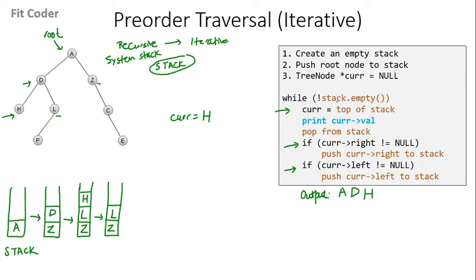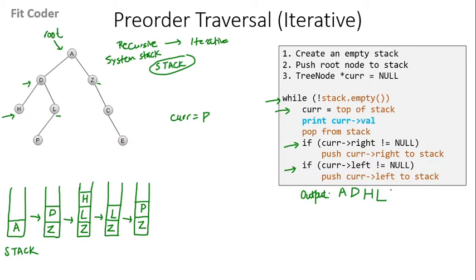We again come to the while condition — stack is not empty. We initialize current with the top of the stack, which is now L. We print L and pop from the stack. We check right of L: right of L is null, so that condition is false. We check left of L: left of L is P, so we push P to the stack. We come back to the while loop — stack is not empty. We initialize current with the top of the stack, which is P. We print P and pop from the stack. We check right of P: null. Left of P: also null. So both conditions are false.